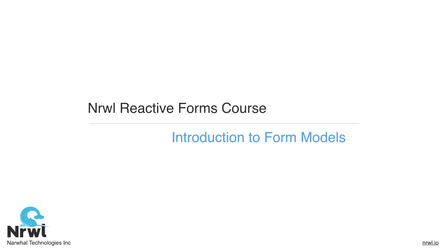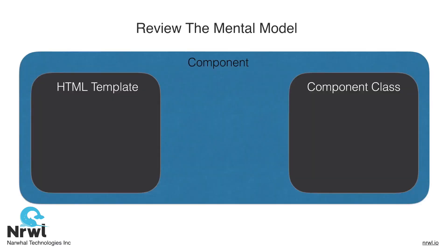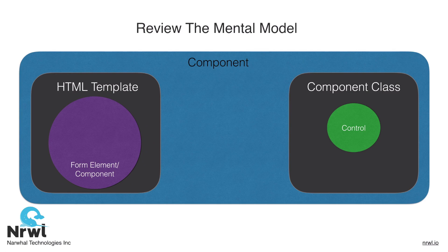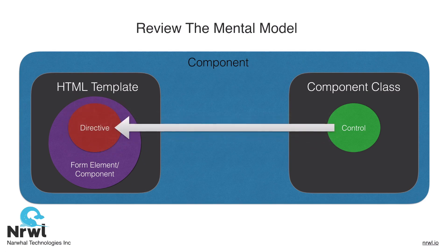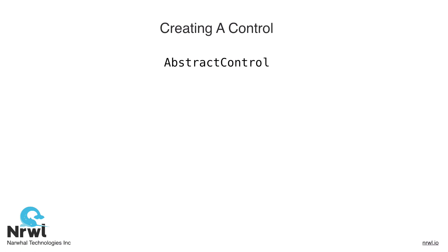Let's talk form models. To start, let's review the mental model we discussed in our previous lesson. Pictured, we have our control that we create in our component class, we have a form element in our template, and we have a directive that we use to bind the control to that element. This mechanism is called the control value accessor. Let's move from this high-level understanding into some of the details, starting with how to create a control object.